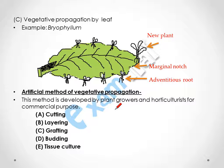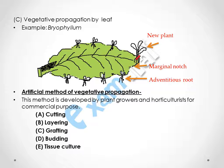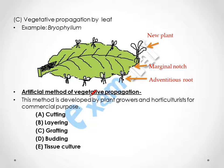Vegetative propagation by leaves — we have the example of Bryophyllum. On the margin of this leaf there is a new plant with roots. If we take out each of these parts from the leaf, they will develop into a new plant.